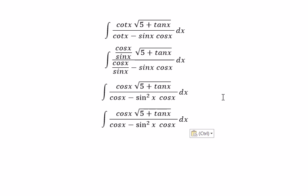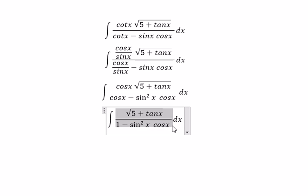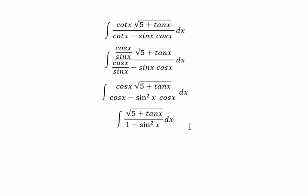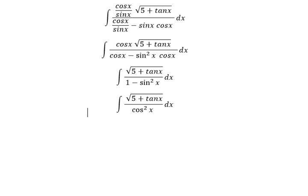Next, cosine X and cosine X — we simplify. Then we change this one for cosine X squared.